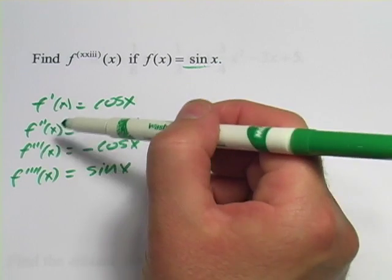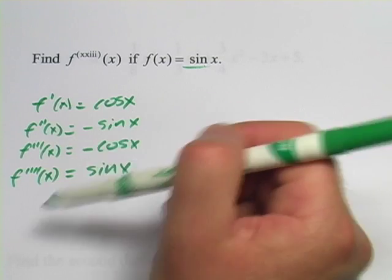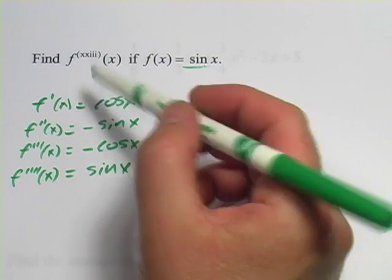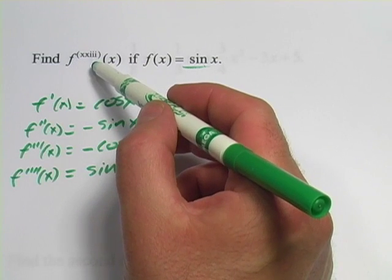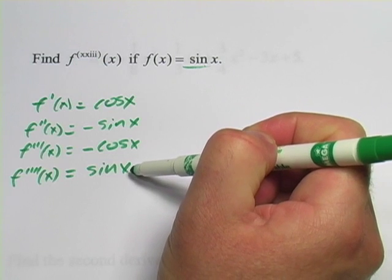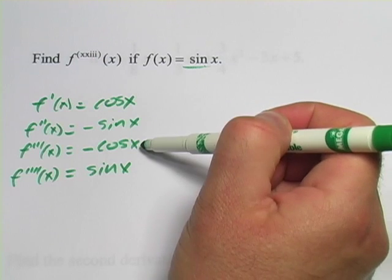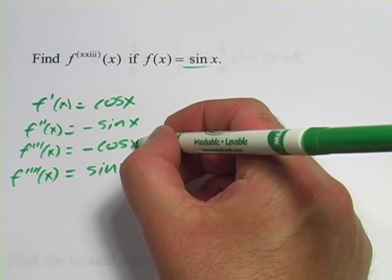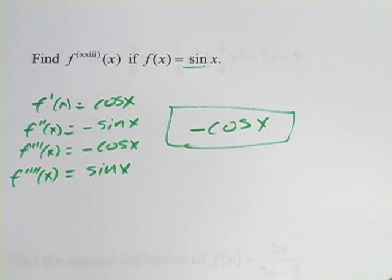First derivative, second derivative, third derivative, fourth derivative, fifth derivative, sixth derivative, seventh derivative, etc. So, in solving this one, what I'd probably do is look for the nearest factor of 4. So this is 23, nearest factor of 4 is 20, so this would be the 20th derivative. If I wanted to find 21st, I'd start back up here. 22nd, 23rd, so the 23rd derivative of sine of x is negative cosine of x.